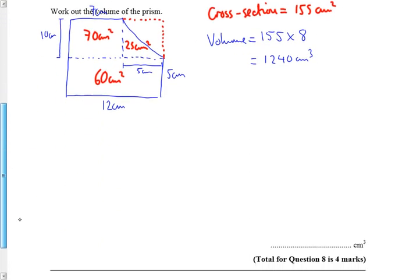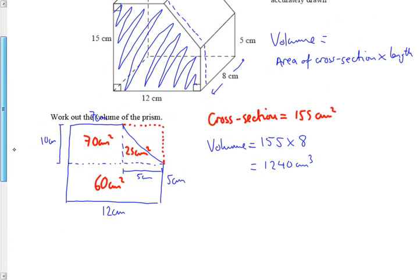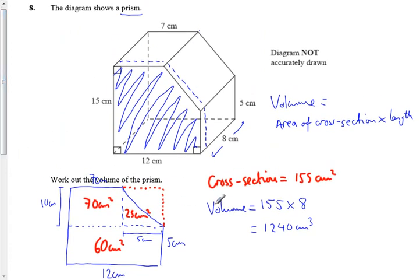Now, it's really important I include the units, oh, they've got the units down there for me, but you might want to go back over and watch this video and check how I calculated, how I broke up the area, and then I worked out the area of the cross-section, and then multiplied it by the length, giving the volume. Okay? Thank you.